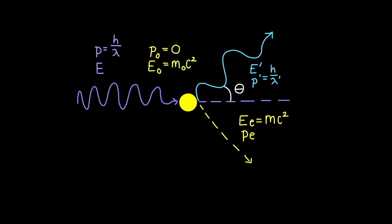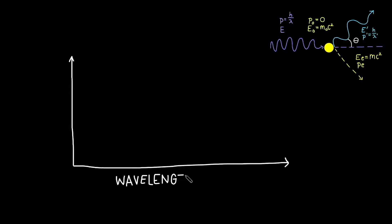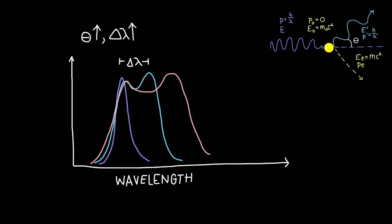If we plot the photon's wavelength on a graph, we'll notice that its intensity peaks at a certain wavelength, as indicated by the purple curve. When it scatters, there will be a shift in the wavelength, with another peak at a wavelength higher than the first. The amount that this wavelength shifts is dependent on our scattering angle theta. When theta increases, the change in wavelength increases.